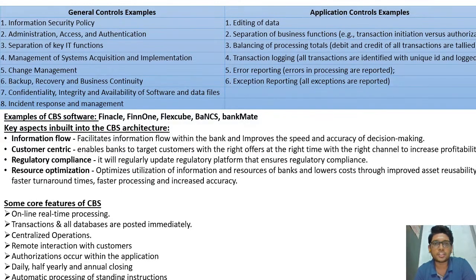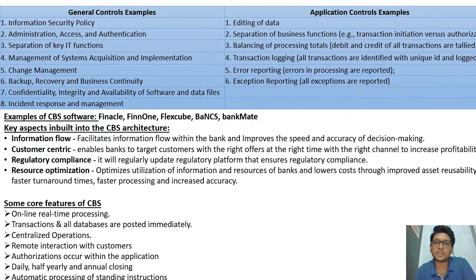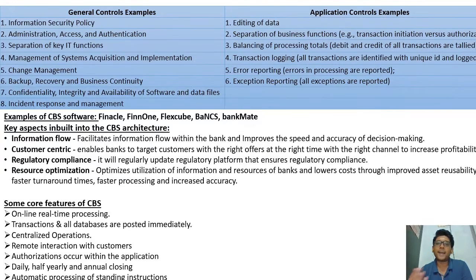Examples of application controls include: editing of data, separation of business functions (e.g., transaction initiation versus authorization), balancing of processing controls (debit and credit of transactions are tallied), transaction logging (all transactions identified with unique IDs and logged), error reporting (errors in processing are reported), and exception reporting (all exceptions are reported). Examples of CBS software include Finacle, FIN1, Flexcube, BANCS, and Bankmate.